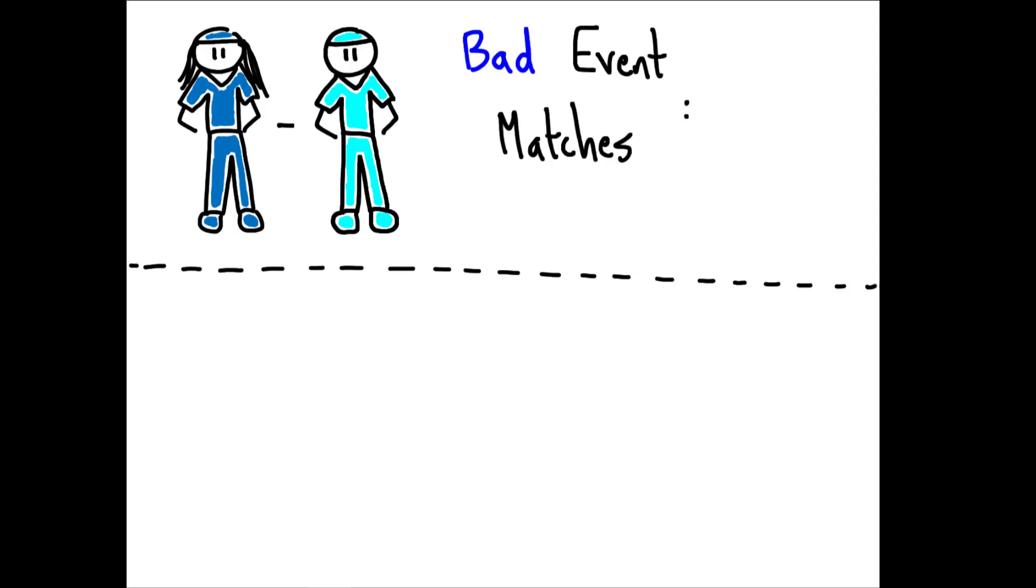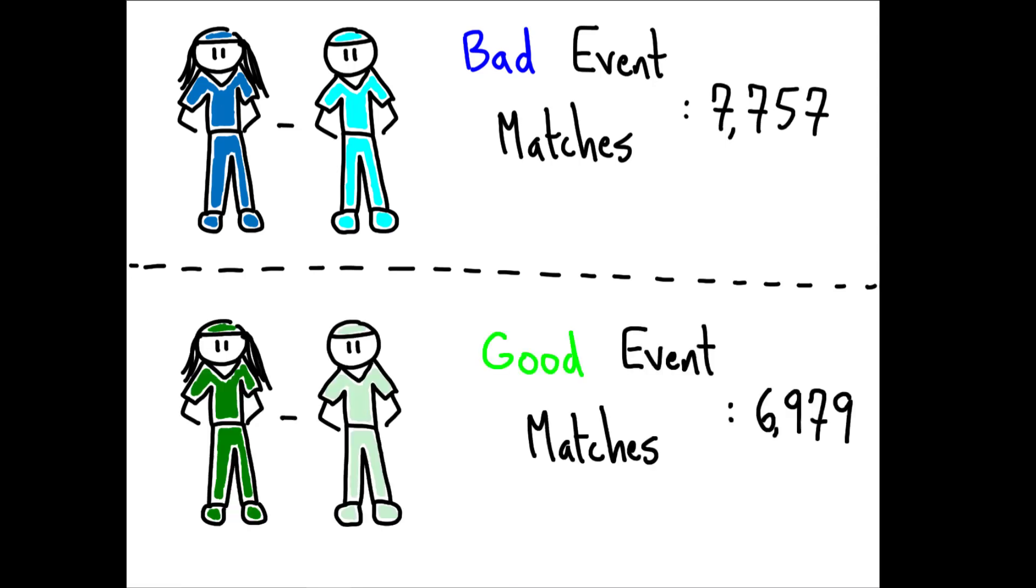This matching strategy yields a sample consisting of over 7,700 matches for bad surgical events, that is cases in which a patient dies, and nearly 7,000 matches for unexpectedly good surgical outcomes, namely an unanticipated survival.